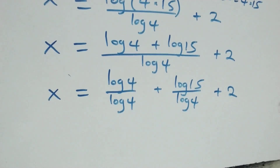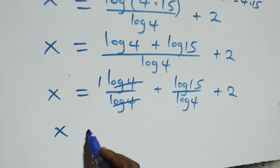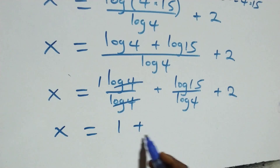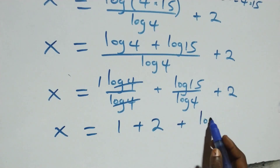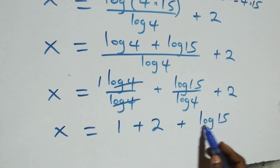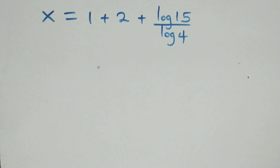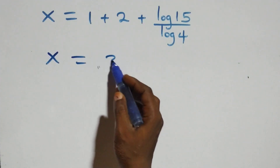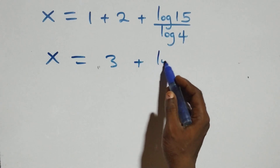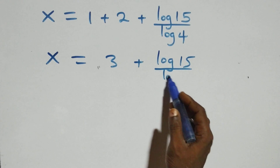Here log four over log four cancels and we have one left, which implies x equals one plus two plus log fifteen over log four. This becomes x equals three plus log fifteen over log four.